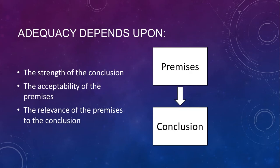Adequacy depends on the strength of the conclusion. A warning: don't call premises adequate — nothing can be adequate except a whole argument. Don't tell me that a premise was adequate to explain the conclusion; adequacy ranges over only the argument as a whole — that is, the premises, the conclusion, and the purported relation between them.